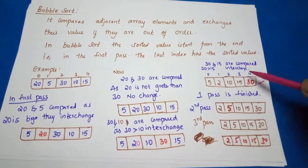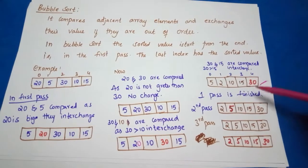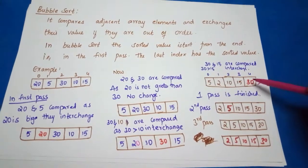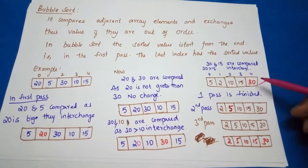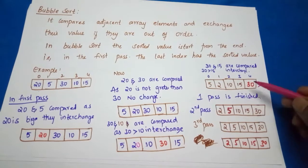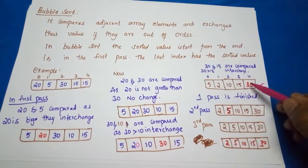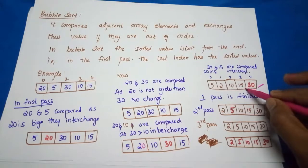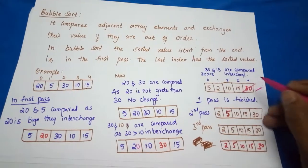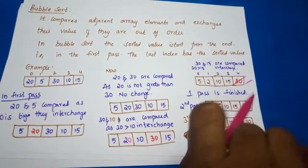The bigger element is placed in the last element, the last size location. So this is how you do it. Now when we go for second pass, do we again need to do this sorting? No, there is no need of doing sorting.